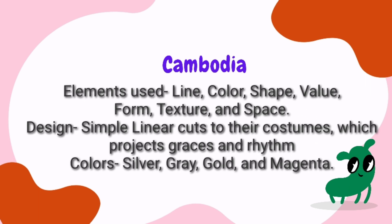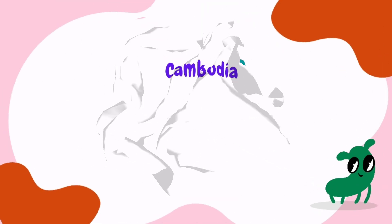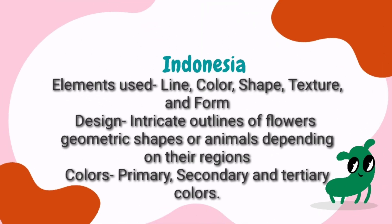Elements and principles used in Cambodia. Elements used: Line, Color, Shape, Value, Form, Texture, and Space. Design: Simple. Colors: Primary, Secondary, and Tertiary Colors.